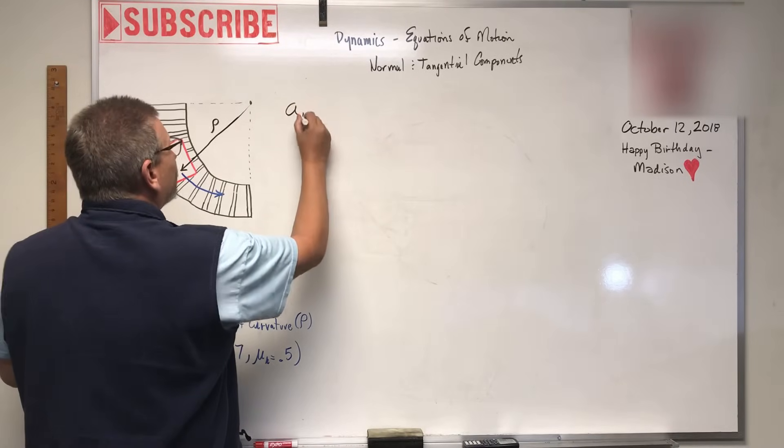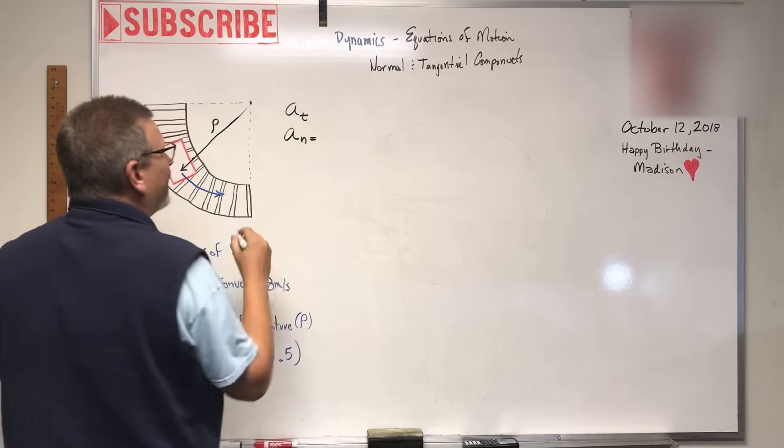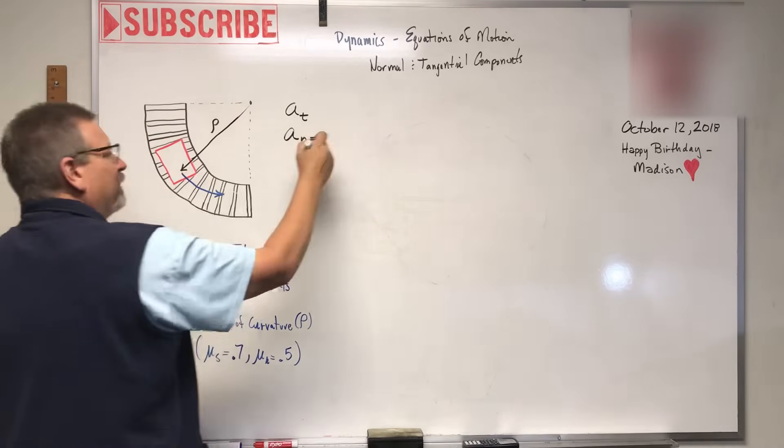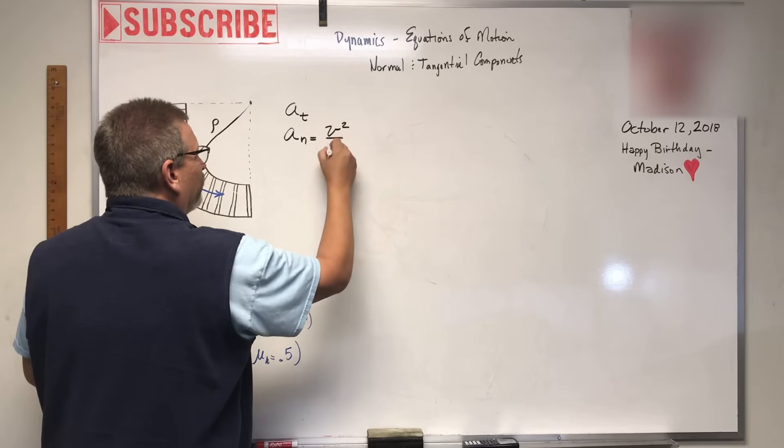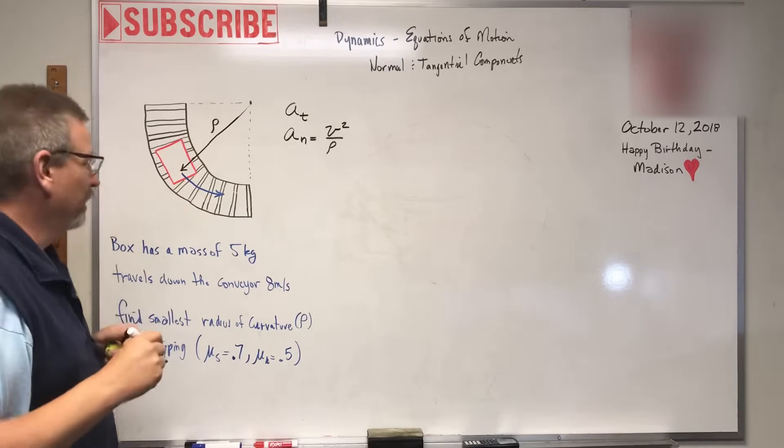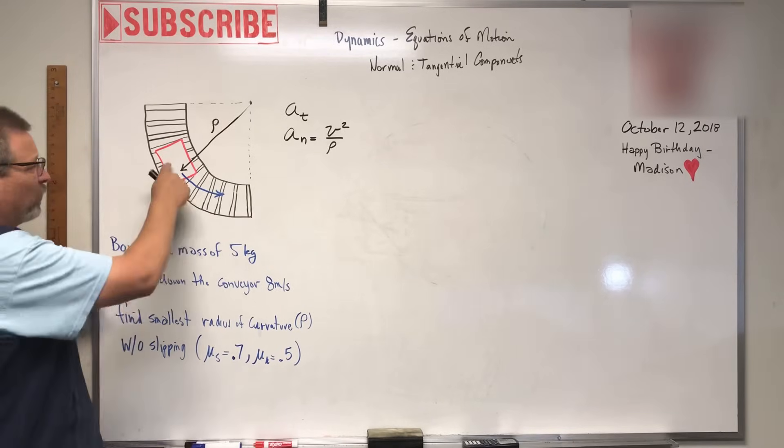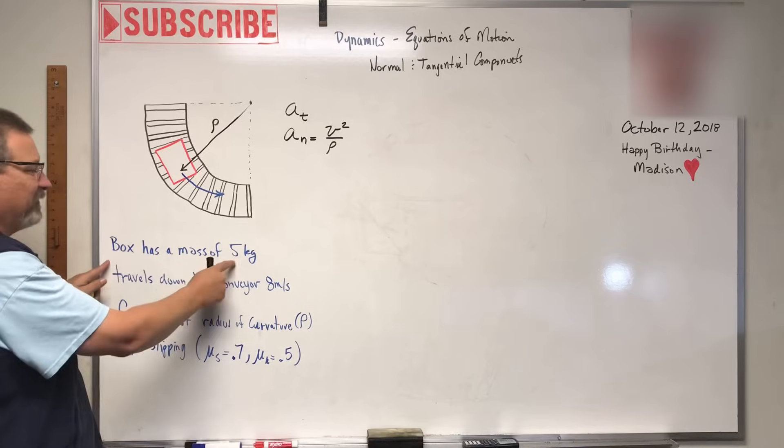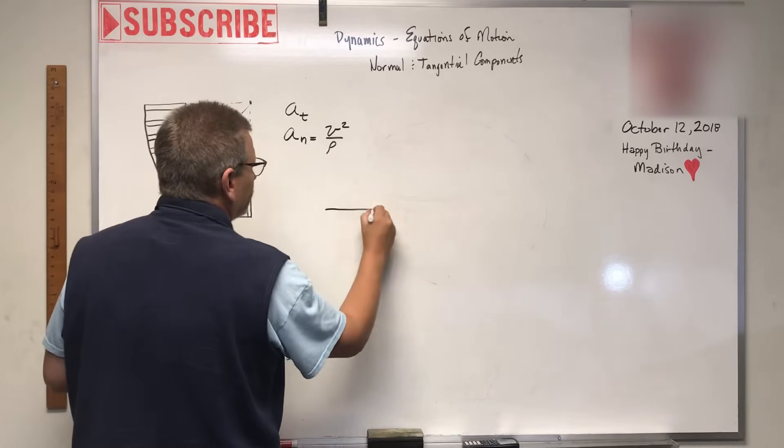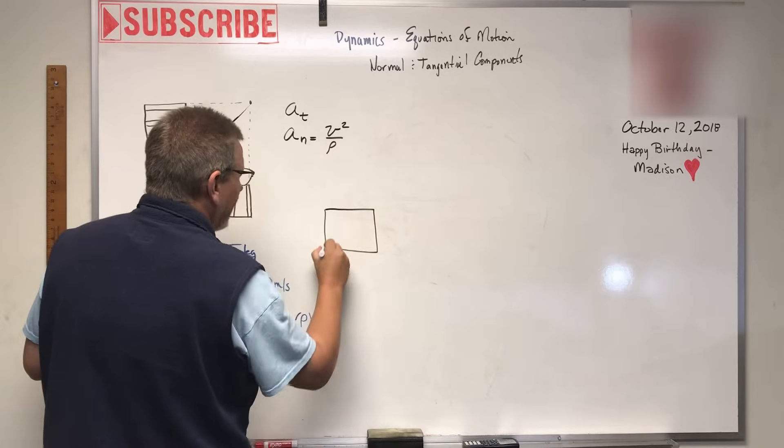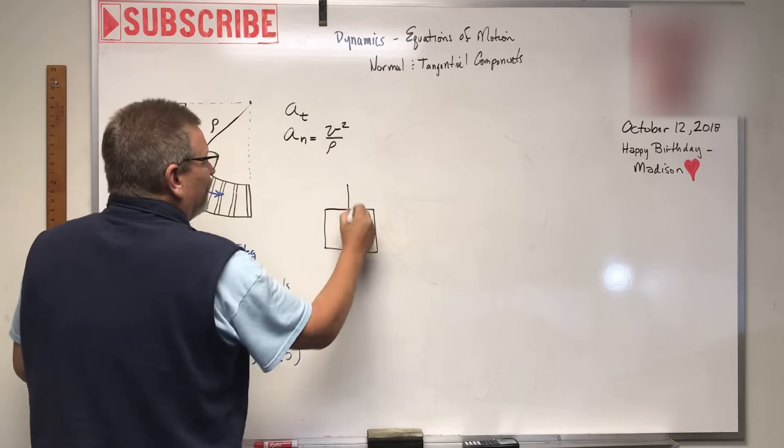We know we have a_t for tangential and a_n for normal. That normal acceleration has an equation: a_n = v²/ρ, the velocity of the object divided by ρ. For this box going around this corner, it has a mass of five kilograms.